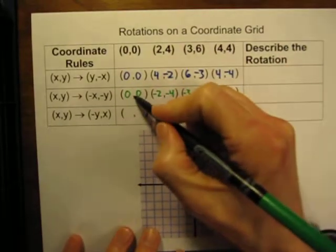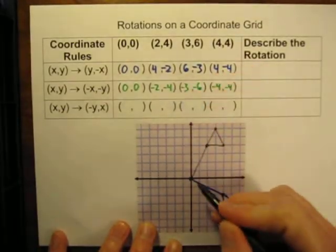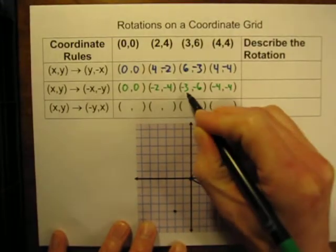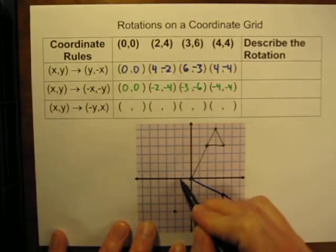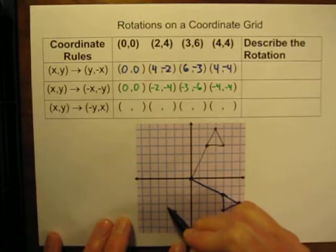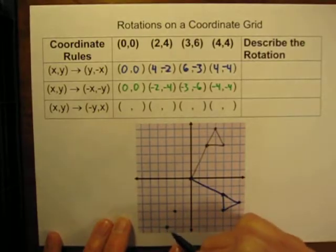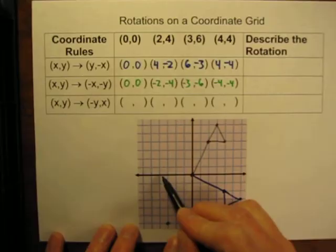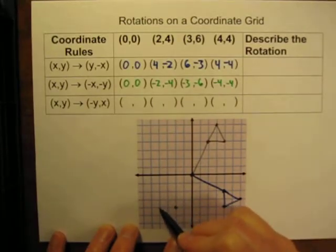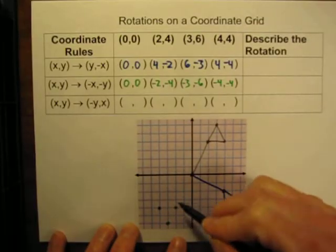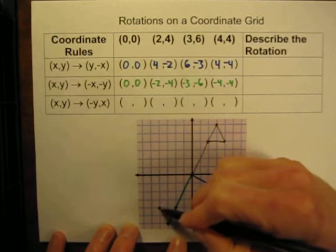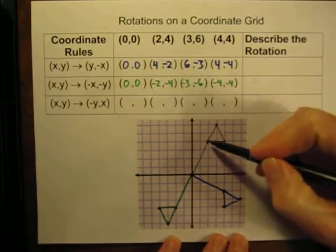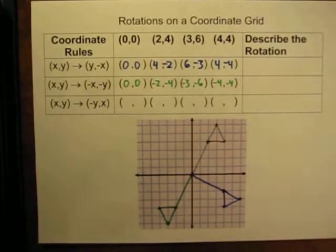Let's graph those new points. (0,0) is still at the origin. (-2, -4) is 2 to the left and down 4. (-3, -6) is 3 to the left and down 6. And (-4, -4) is 4 to the left and down 4. We connect them again with a line, and there is our new flag. It has rotated from our initial flag up here, around to that new position.